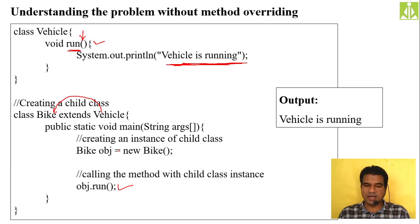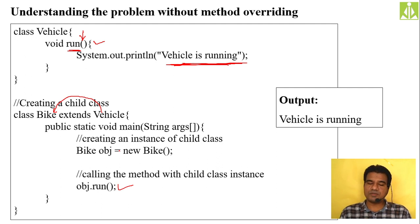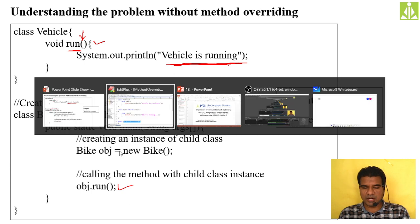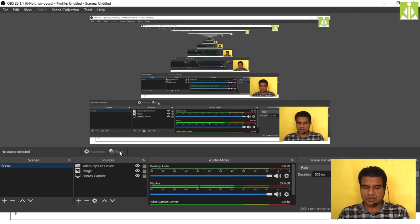So this is the concept of method overriding: having the same method name as well as parameters both in parent class and child class. When you create the child class object and invoke the overridden method, it gives the specific implementation of that class. It will not go to the parent class run method.